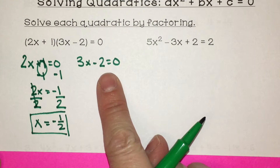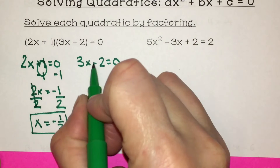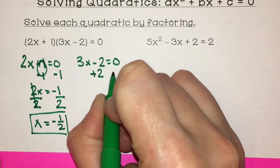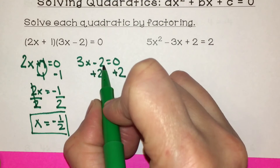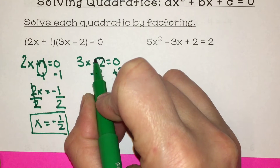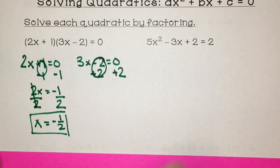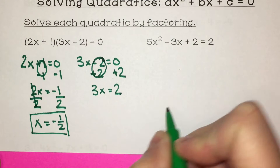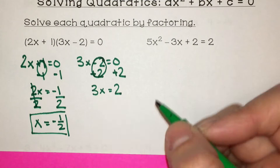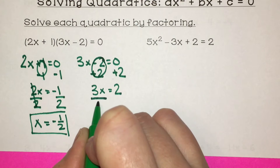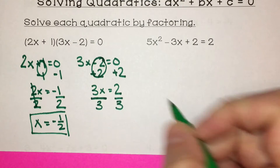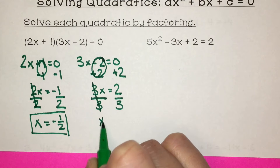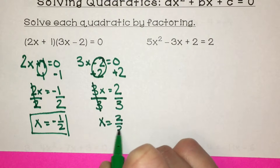For my other value of x, I have a minus 2 on the same side as x, so the opposite operation is plus 2 to both sides of the equal sign. Negative 2 plus 2 is 0, so I have 3x equals 2. x is being multiplied by 3, so the opposite operation is to divide by 3 on both sides. So x is equal to 2 thirds.